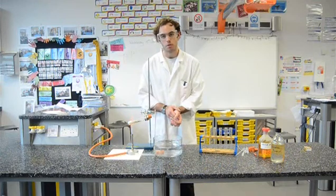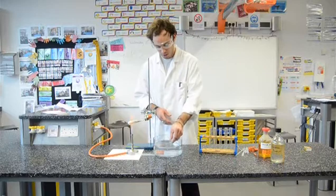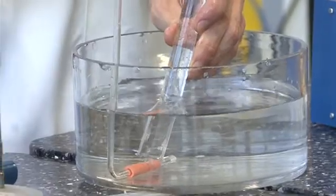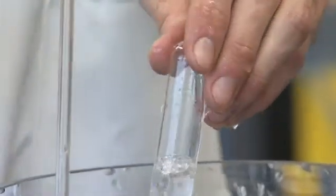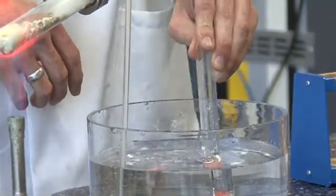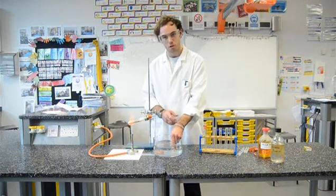Allow that to bubble away briefly to remove the air from inside the delivery tube. Once you start to achieve a steady flow of bubbles, you're going to start collecting some gas. Submerge your test tube in water, invert, and hold over the bubbles until all the water has been expelled. Repeat this until you've obtained six test tubes full of your gas.